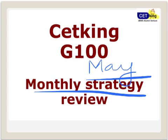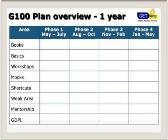Next month when we have the meeting in June, we'll first review what we have done in May and then give you an overview of what we're going to do in June. So this is my G100 overview plan.